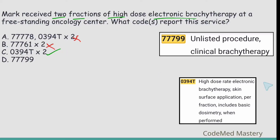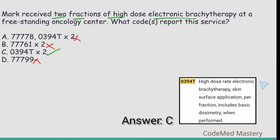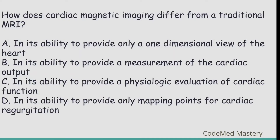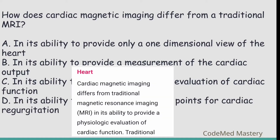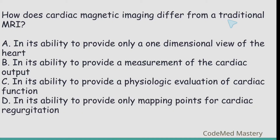Next question: How does cardiac magnetic imaging differ from a traditional MRI? You can find the answer by referring to the index of your CPT manual under magnetic resonance imaging (MRI), then check the code set for heart: 75572 to 75565. Above code 75572, the guidelines state that cardiac magnetic imaging differs from traditional MRI in its ability to provide a physiologic evaluation of cardiac function. So the right answer is option C.